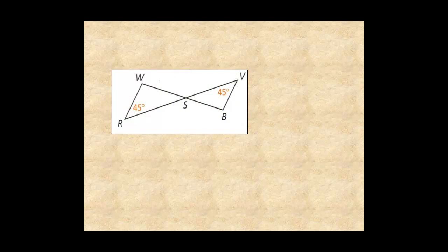There are several methods for showing triangles are similar. The first is angle-angle similarity. If two angles of one triangle are congruent with two angles of another, then the triangles are similar. In this diagram, angles R and V are both 45 degrees, so they are congruent.